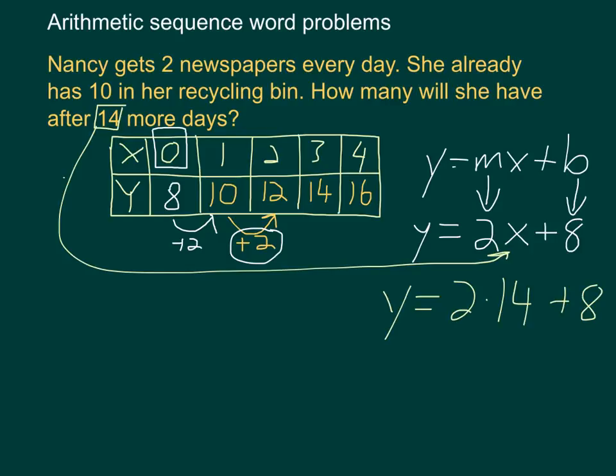Remembering PEMDAS, our order of operations, we would do our multiplication first, then our addition. We get y equals 28 plus 8. Or after 14 days, we know that Nancy will have 36 newspapers in her recycling bin.